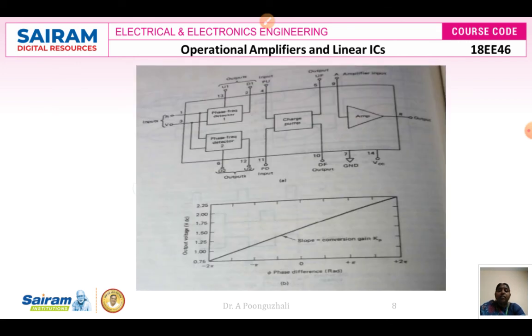The slope of the monolithic phase detector output is linear over a range of 2-pi radians. This is the graph of output voltage versus phase difference. Thank you.